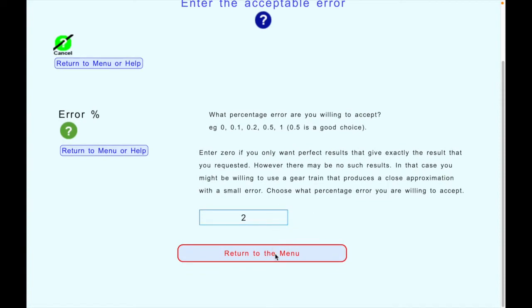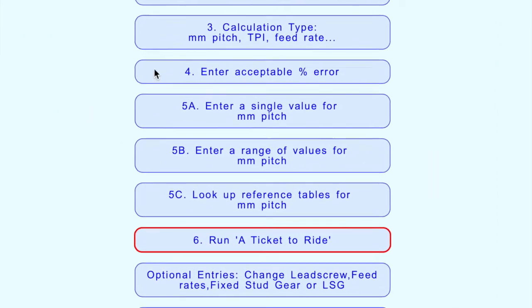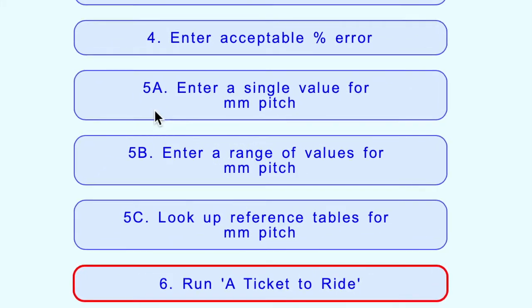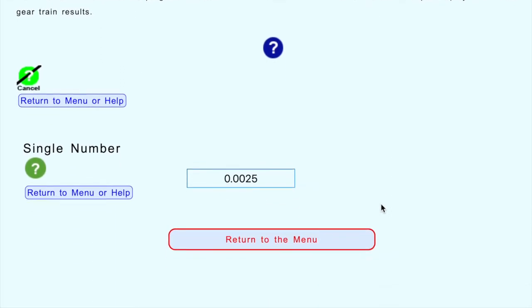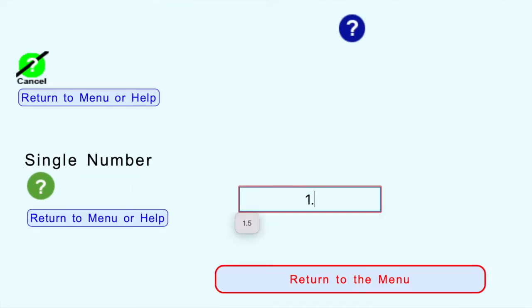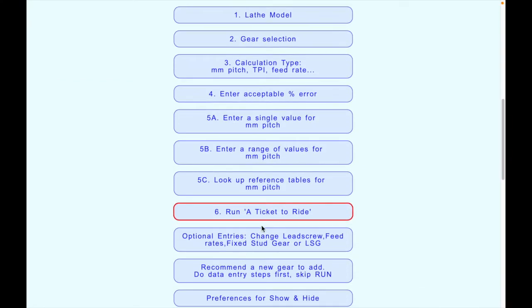We've entered the error - that was step four. We're now on step five, which has three different options so you only choose one. The first and simplest is to enter the pitch you want directly - enter your required pitch in millimeters for your metric thread. So it knows we've requested metric. For the pitch, say 1.25 millimeters, and again there's information in the help file. Let's go straight to the menu and click run.